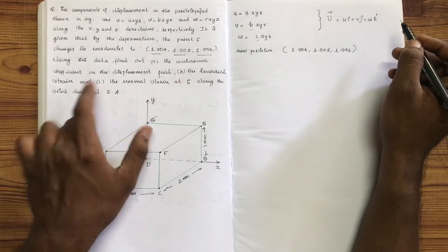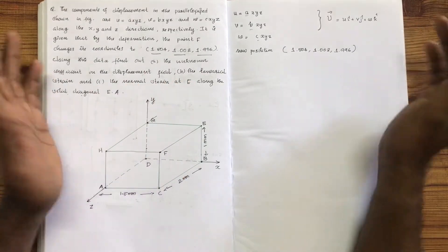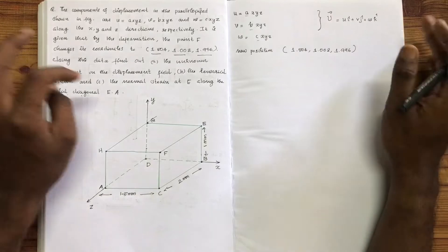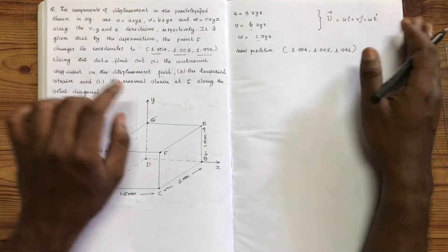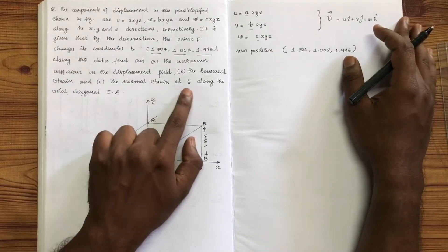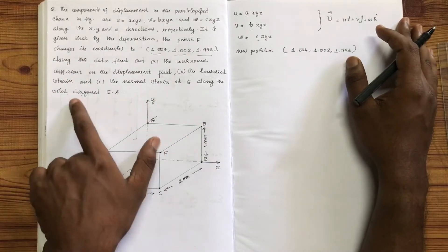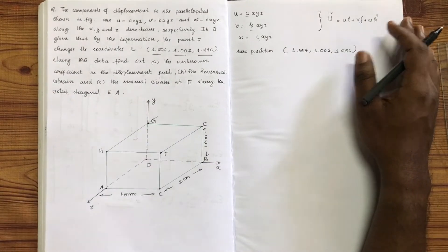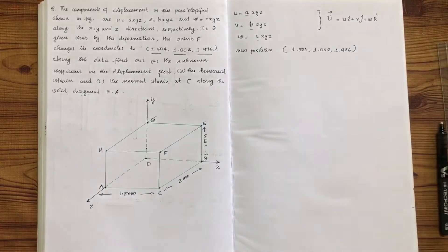We need to find the tensorial strain — both the normal strain and shear strain. The tensorial normal strain along the solid diagonal E-A is also required.